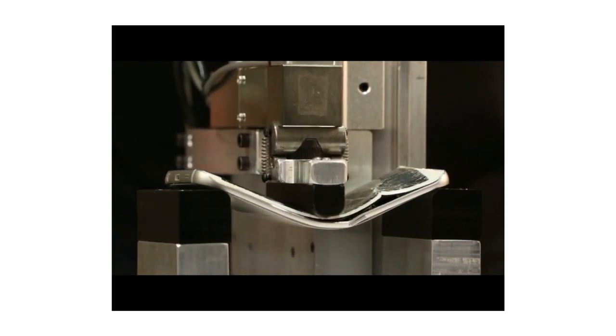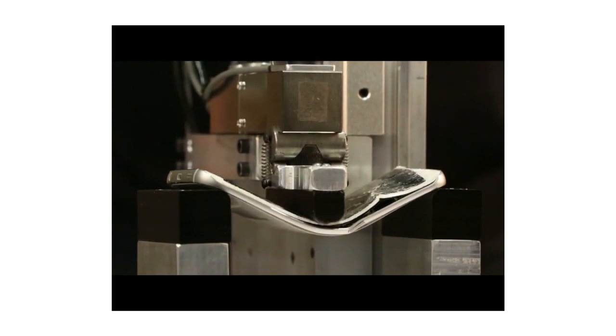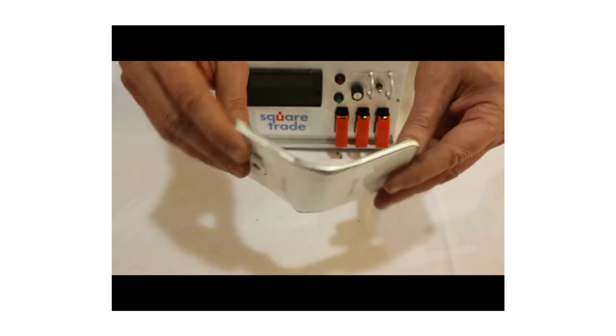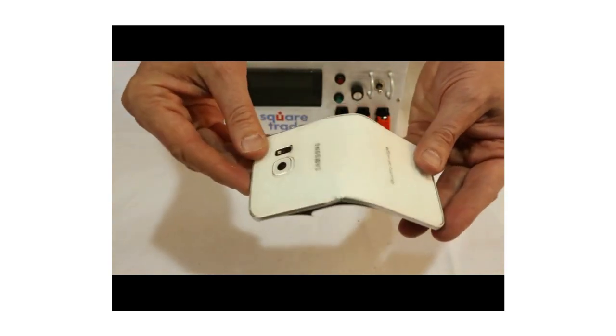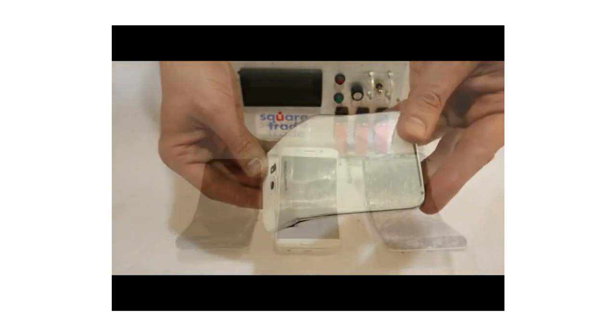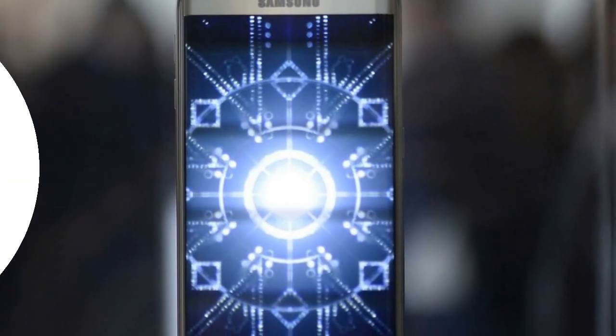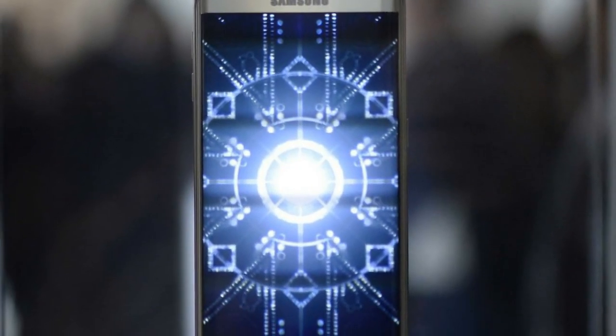With the Samsung Galaxy S6 Edge bending at the same pressure, we will have to see whether any owners experience this once the device begins shipping. The issue could be more serious on this phone if it does occur on production handsets as the display cracked when the phone bent whereas the iPhone remained usable although somewhat damaged.